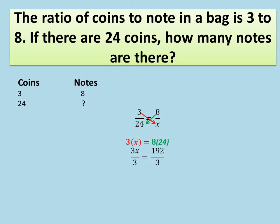Then we simplify. 8 times 24 gives us 192, so we have 3X = 192. We divide both sides by 3 to get X by itself. Dividing both sides by 3 gives us X on the left-hand side and 64 on the right-hand side. That means there are 64 notes in the bag. The notes have 8 parts versus the coins which only have 3 parts.